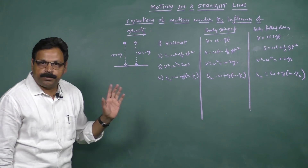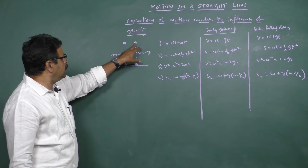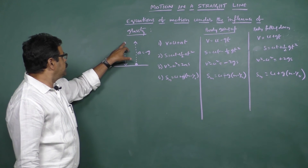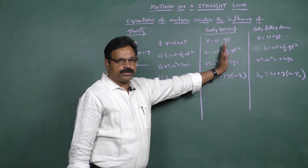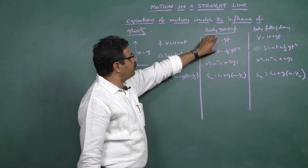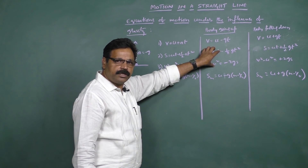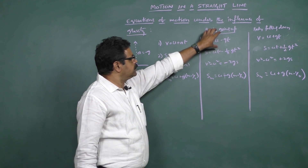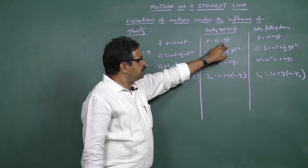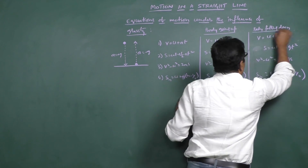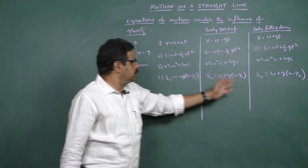That means whenever a body is moving under the influence of gravity, 'a' must be replaced by g. In the case of a body moving upwards, 'a' must be replaced by minus g, whereas when it is coming downwards, 'a' must be replaced by plus g. That is how the equations of motion change depending upon whether the body is moving against or towards the gravitational influence.